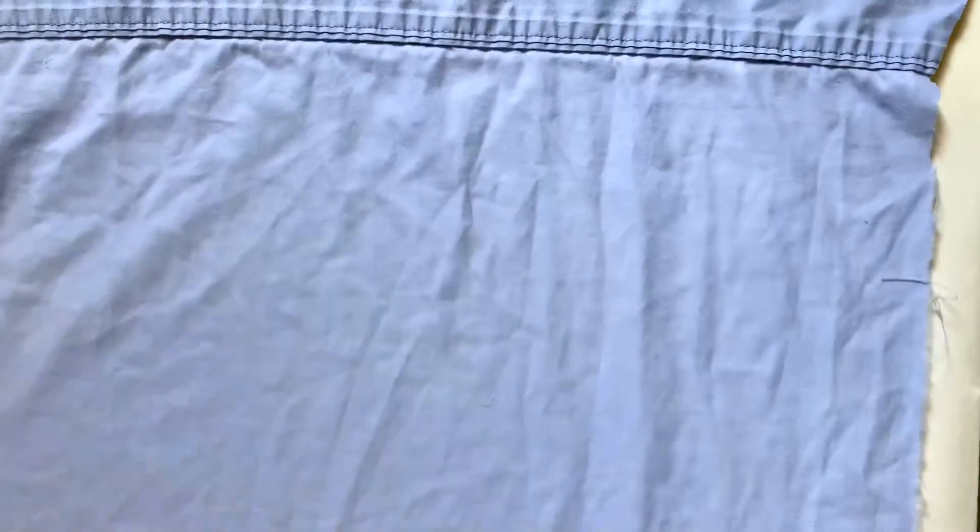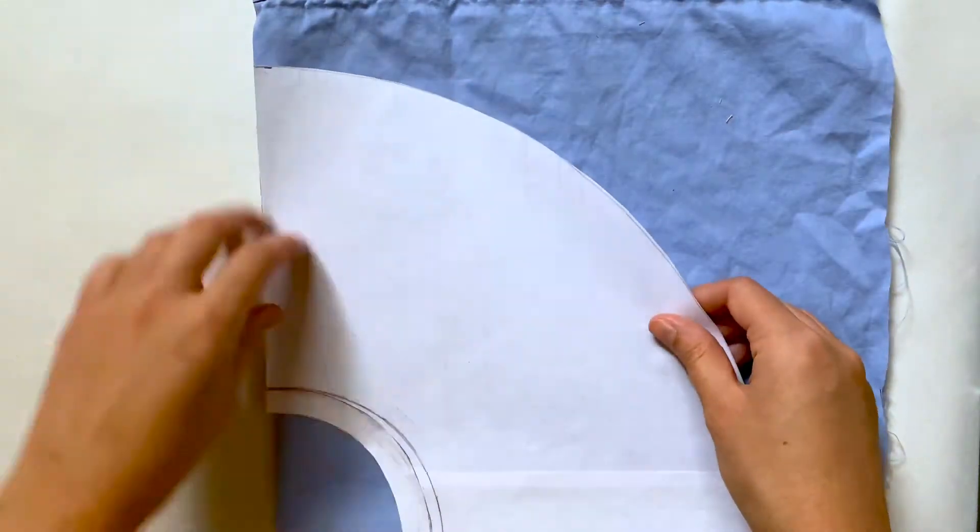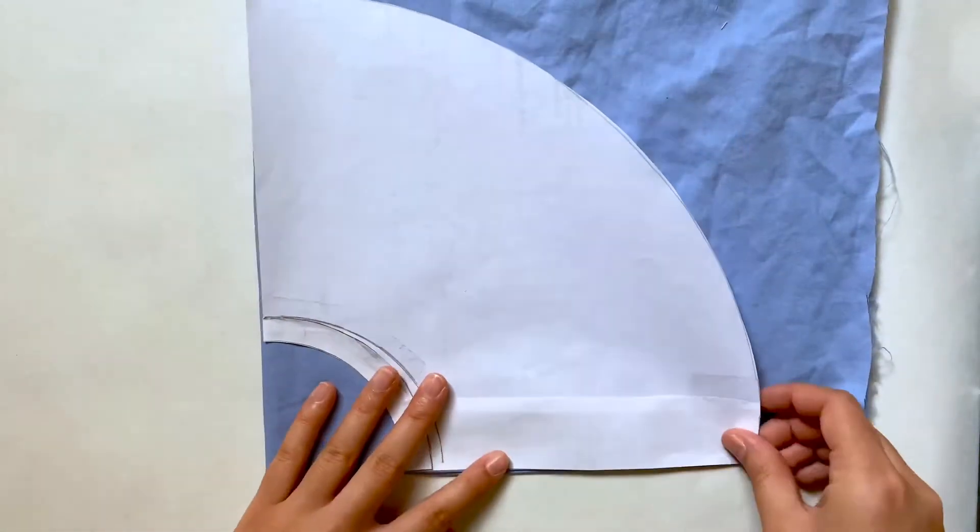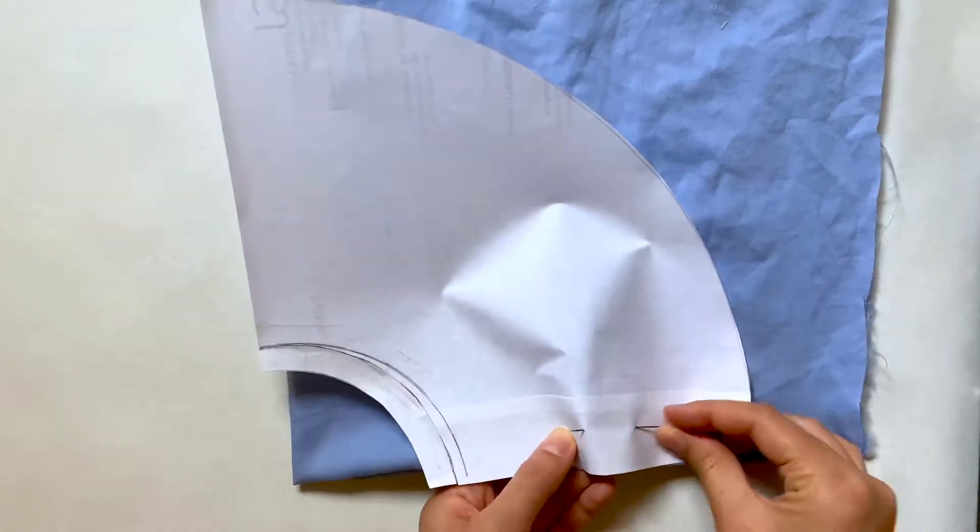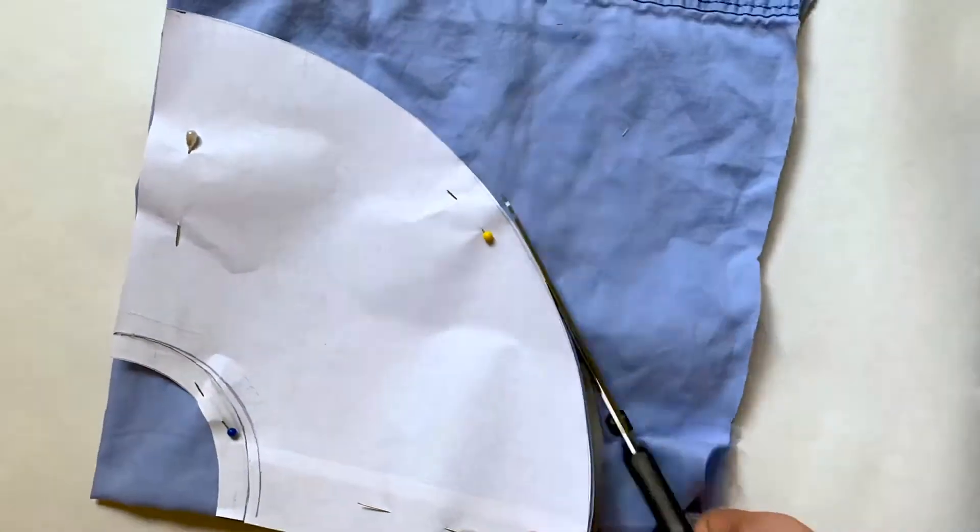To start, I'm going to take my fabric, which was actually a pillowcase that ripped, and fold it into fourths. Then I can just lay my pattern on top, and when I pin it down and cut it out and unfold it, it'll end up being a perfect circle just how I want it. So now I'm just pinning the pattern down and cutting it out, then I'm going to set that aside.